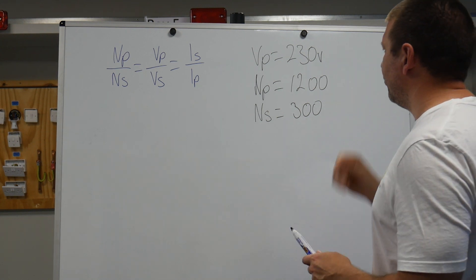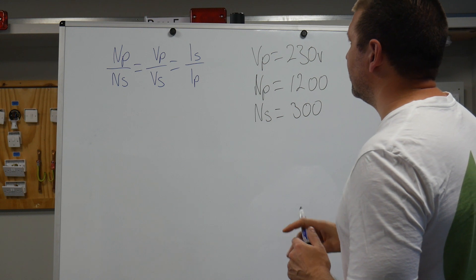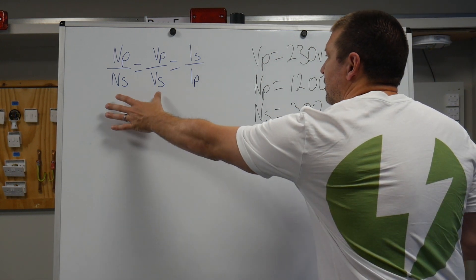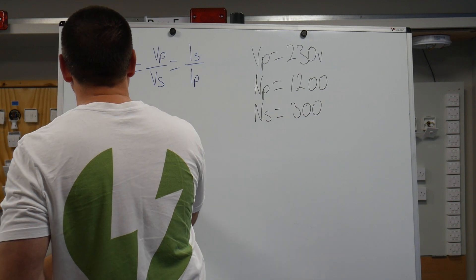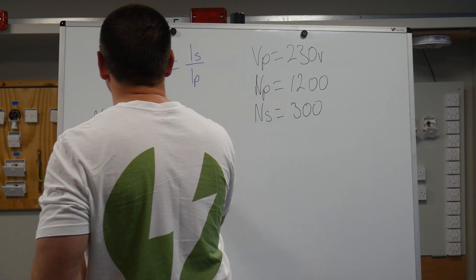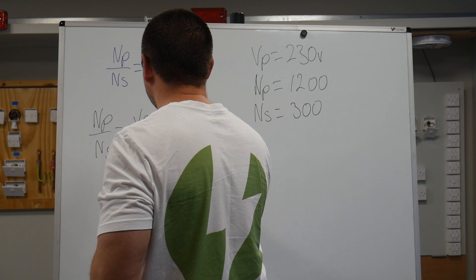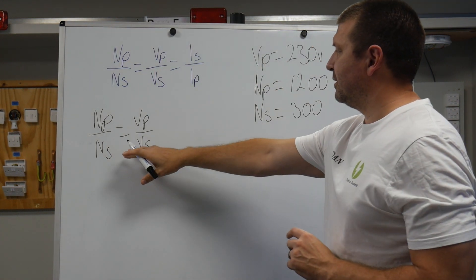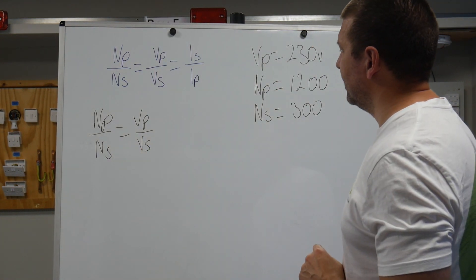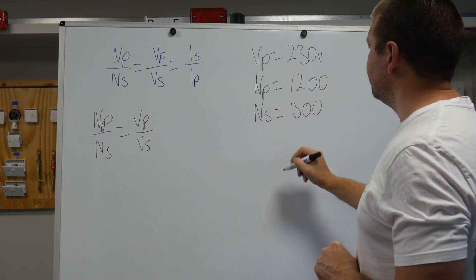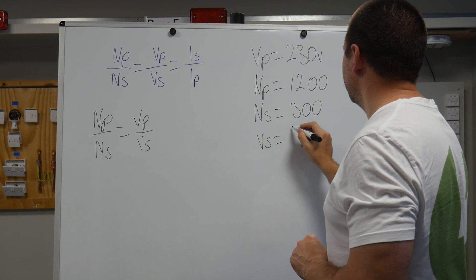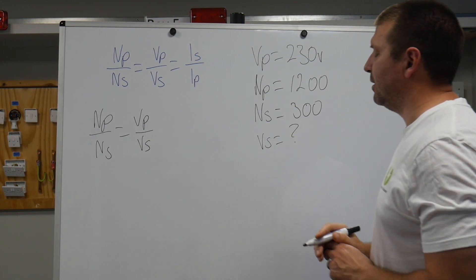Right, let's write down our formula. I'm going to be using the first two parts. So I will be doing Np over Ns equals Vp over Vs. Now I am looking for Vs. Let's see, Vs question mark.